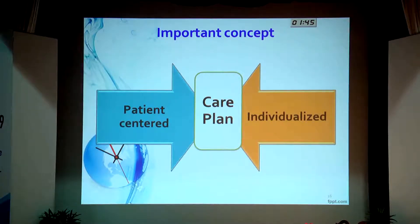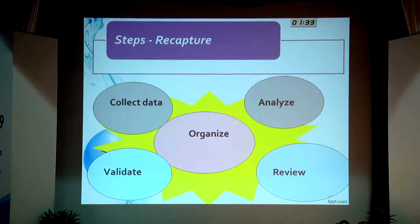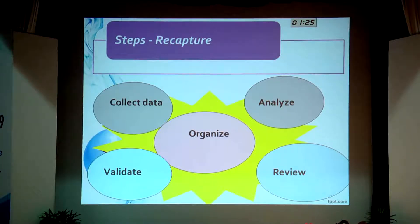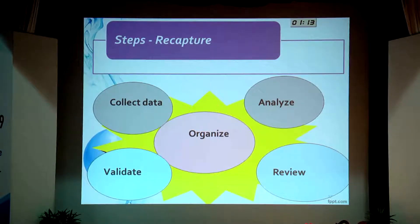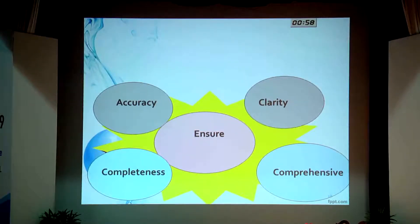Ultimately, the care plan that is made should not be just general or common to all patients at all times. It has to be individualized and patient-centered. To recapture: the nurse must collect data — not just by history alone, but through physical assessment and lab data, putting everything together. At the end, she should be able to analyze and understand which problems need immediate interventions. Beginners can validate the plans they make as a learning exercise. The plan must be reviewed periodically so they can move forward. As it is a legal document, it's important to ensure it is accurate, clear, complete, and comprehensive.